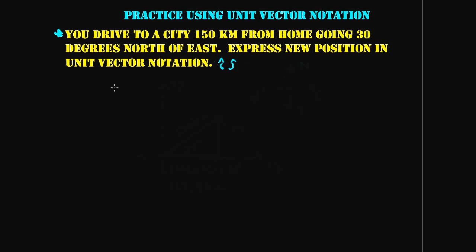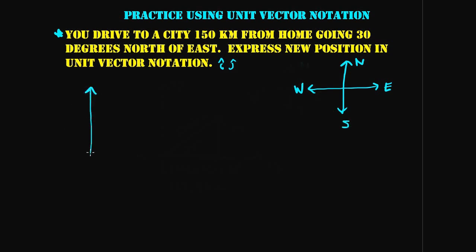We know it's saying 30 degrees north of east, so we might want to draw a little compass so we don't get confused about which direction is which. So we have east, north, west, and south. We're going to draw out our vector — here's the east direction and here's the north direction.